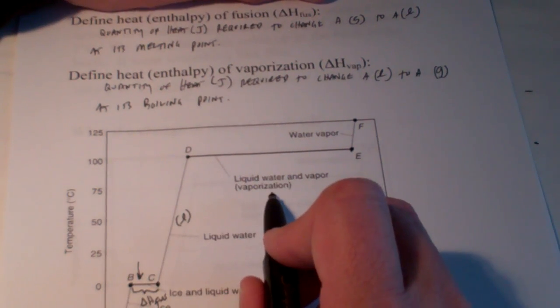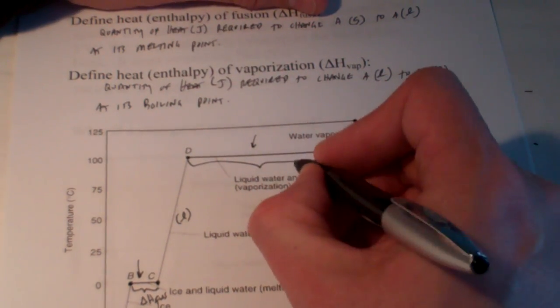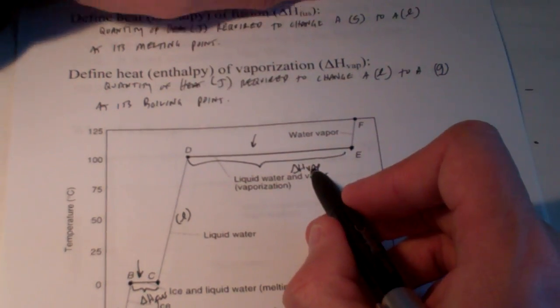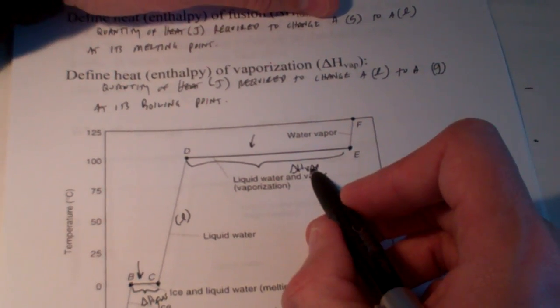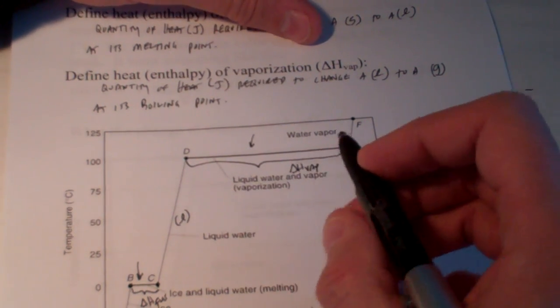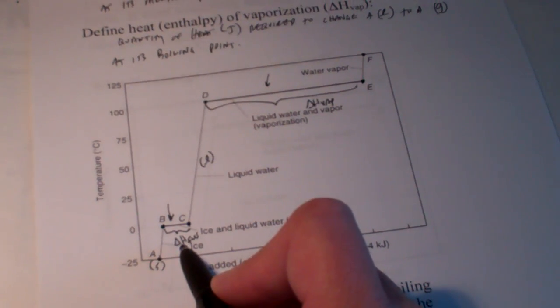Once again, we're changing phase. This energy here, from here to here, is called our heat of vaporization. So, we're taking those liquid particles and adding energy to separate them into gas particles. Notice that the heat of vaporization for a substance is much larger than its heat of fusion.